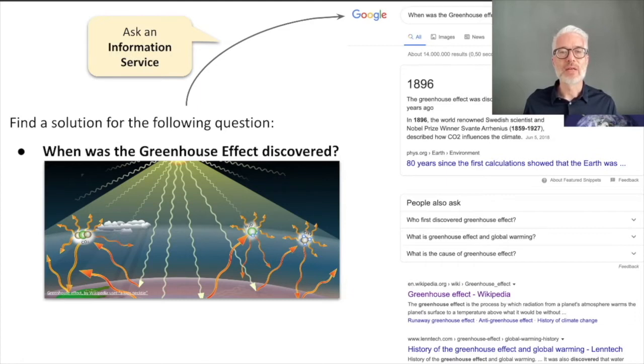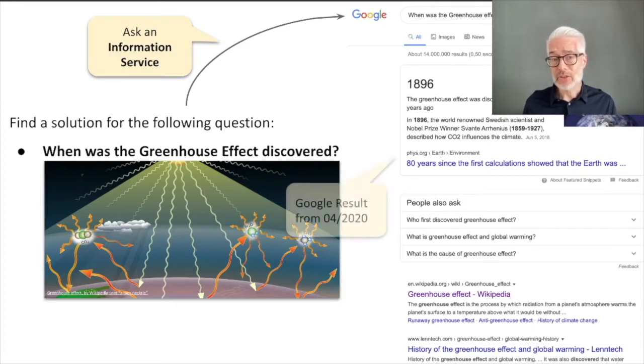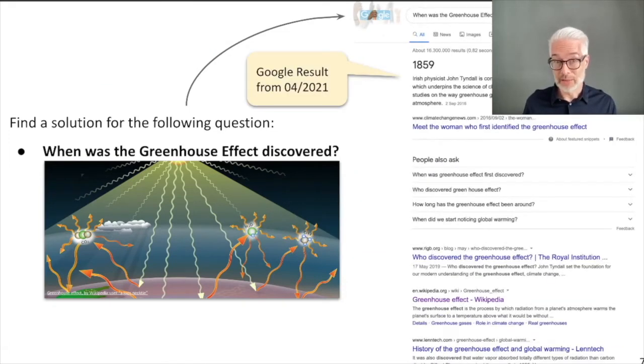I thought to myself, okay, I did this last year. This year I wanted to verify the result, and surprise surprise, in 2021 the result changed to 1859. And there was also no notion of Svante Ahenius. Instead there was an Irish physicist called John Tyndall who was responsible for discovering the greenhouse effect. So which should I trust? Why has this information changed?